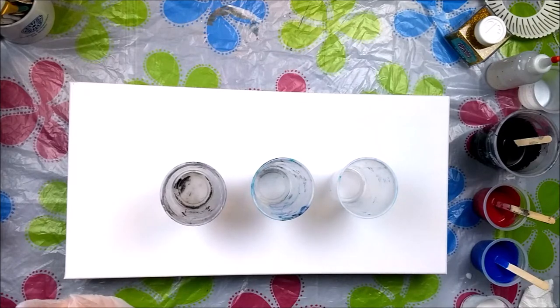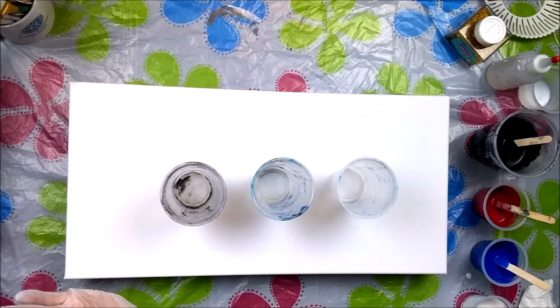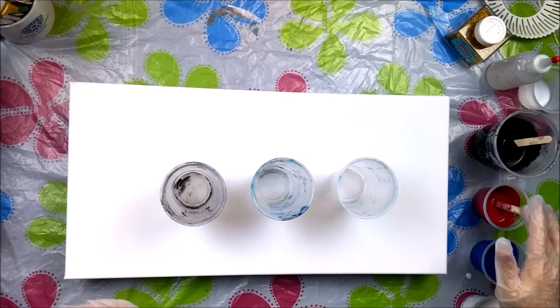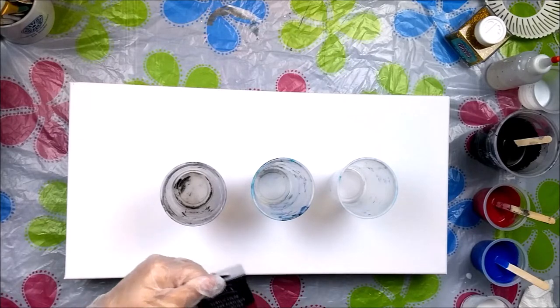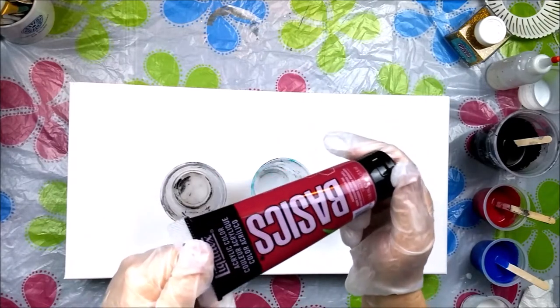Phthalo blue and black for the middle pour, or maybe the third pour, and then this crimson alizarin crimson hue. If I'm saying it wrong, somebody tell me in the comments because I pride myself on being an English expert.